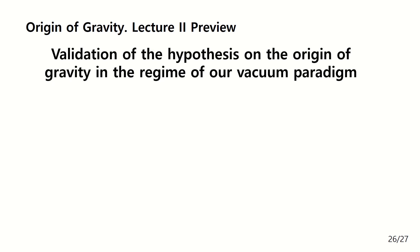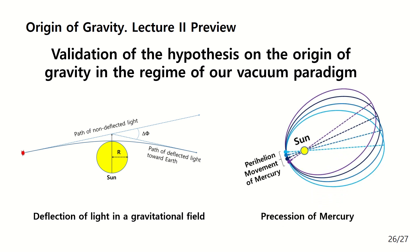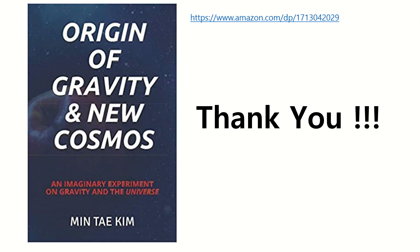In this lecture, we introduced the new concept of vacuum and the origin of gravity. In lecture 2, we are going to validate our hypothesis by examining two things: the deflection of light in a gravitational field and the precession of Mercury. We will compare them with those of Einstein's general relativity. Thank you for your attention. My book Origin of Gravity and New Cosmos is waiting for you — it tells more interesting stories. See you in lecture 2.